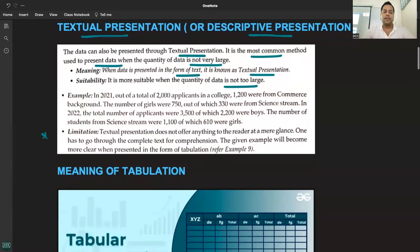The limitation of textual presentation is that it does not offer anything to the reader at a mere glance. One has to go through the complete text for comprehension. You can't tell at a glance what the status is.